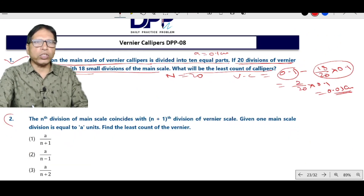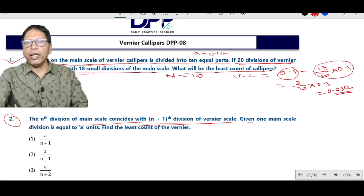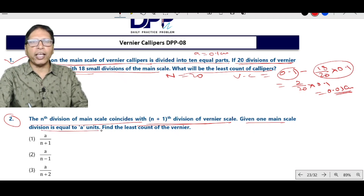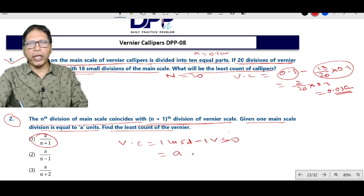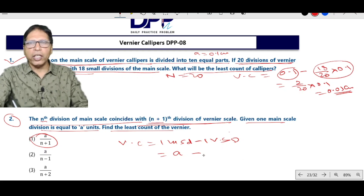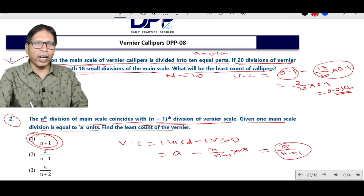Question number 2: If N divisions of main scale coincide with N plus 1 divisions of Vernier scale, and 1 main scale division equals A. Vc equals 1 MSD minus 1 VSD. Since N plus 1 VSD equal N MSD, 1 VSD equals N/(N+1) into A. Therefore Vc equals A divided by N plus 1. Option 1 is correct.